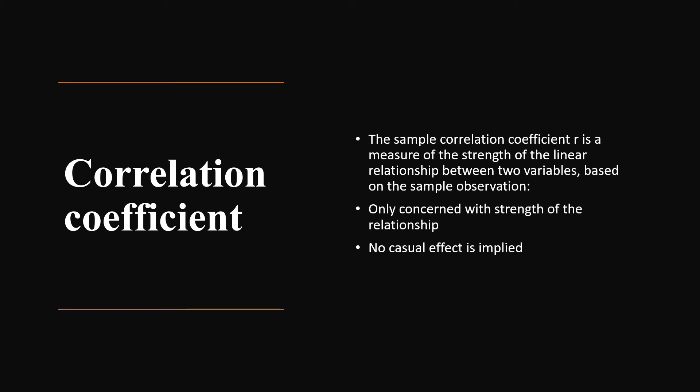The sample correlation coefficient, r, is a measure of the strength of the linear relationship between two variables based on sample observations. It is only concerned with the strength of the relationship — no causal effect is implied in the correlation coefficient.